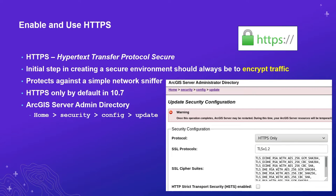HTTPS only is enabled by default in version 10.7 or higher. We make these changes by going into the ArcGIS Server Administrative API, under Home, Security, Configuration, Update, and setting the HTTPS requirements there. It cannot be overstated how important enabling HTTPS only is. There are very few use cases that require plain text HTTP only. At a minimum, all sites should support both HTTP and HTTPS using a certificate provided by a certificate authority.